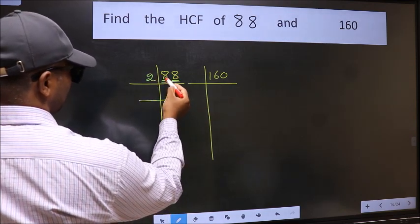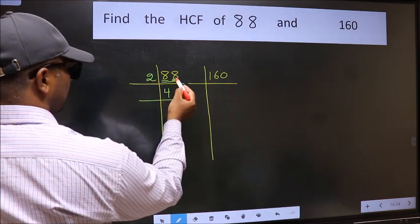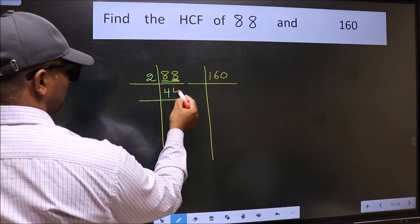First number 8, when do we get 8 in 2 table, 2 fours 8. The other number 8, when do we get 8 in 2 table, 2 fours 8.